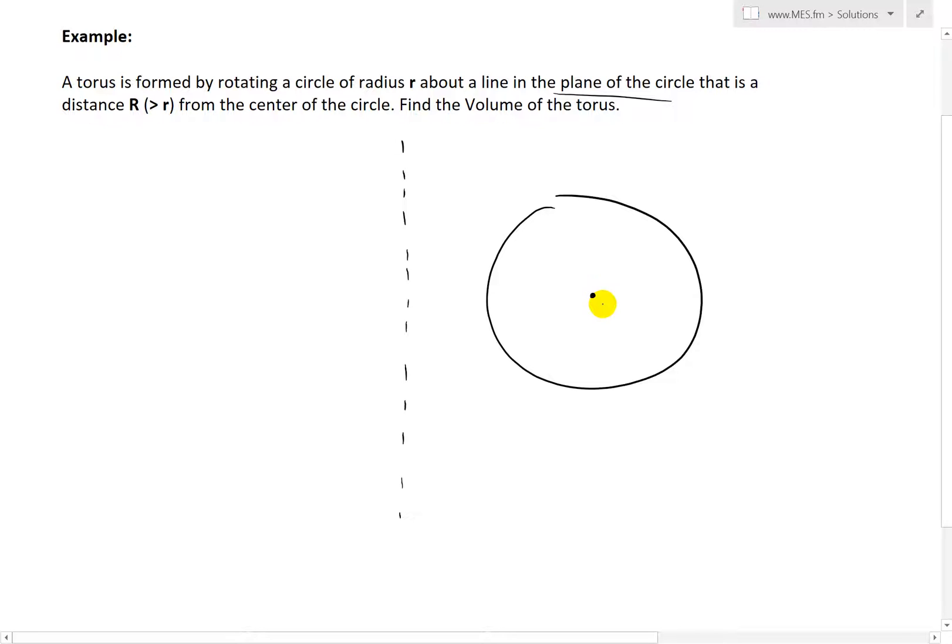So we have a circle like this with the radius r. So let's draw this radius across this way, r. And now this line. So when we rotate this circle about this line, and this line is a distance that is R from the center of the circle. So this full length here is R. And this is obviously greater than the small r. So this circle is completely on one side of the line.